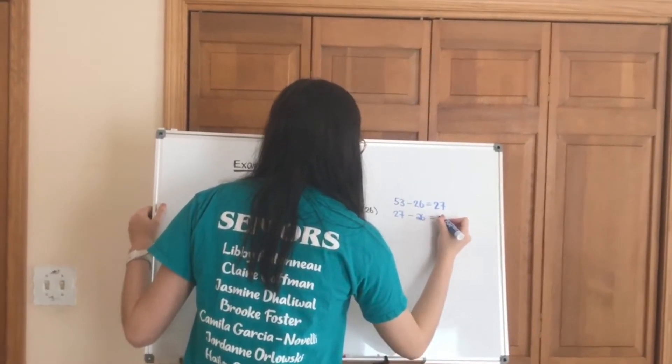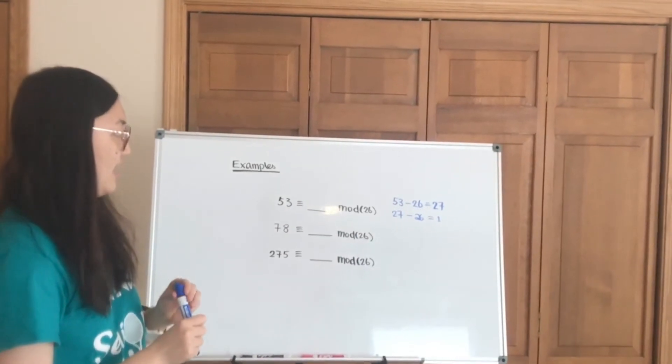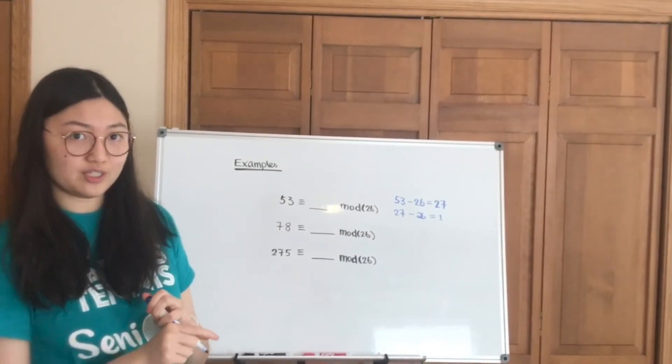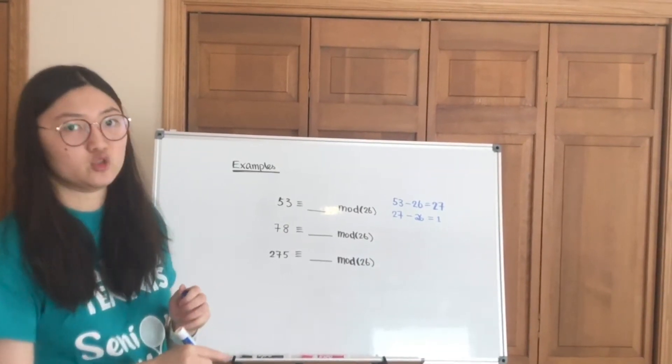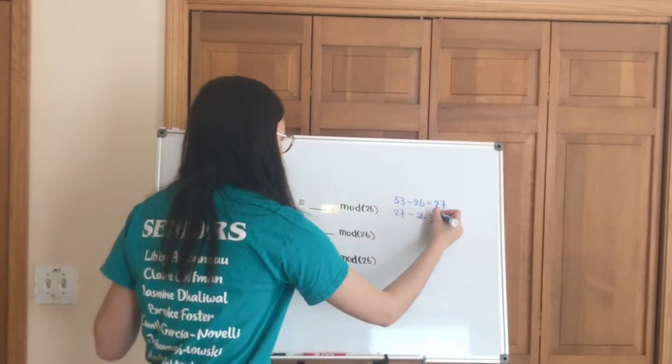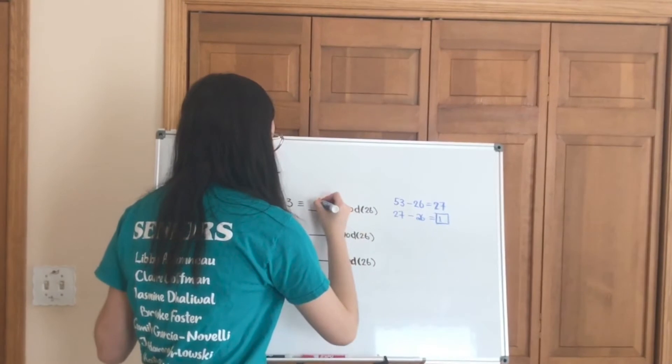So that gives us 1. This means that there are in total two 26s in 53. And when we transfer it into mod 26, we're going to note that the answer is going to be 1.